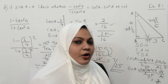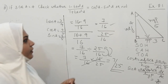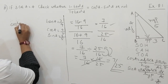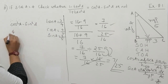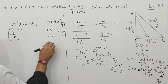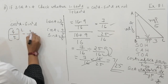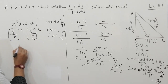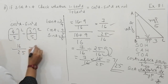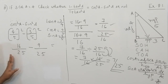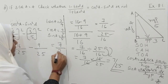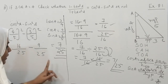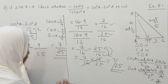Now solving the right-hand side: cos²A minus sin²A. Substituting cosA equals 4 by 5 and sinA equals 3 by 5: (4/5)² minus (3/5)² equals 16/25 minus 9/25. The denominators are the same, so we subtract directly: 16 minus 9 equals 7, giving 7 by 25. Now you can see that LHS equals RHS.